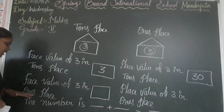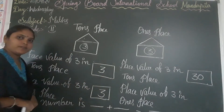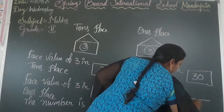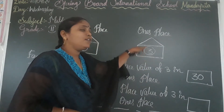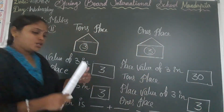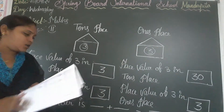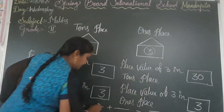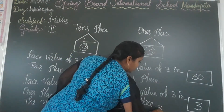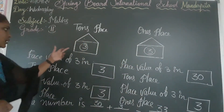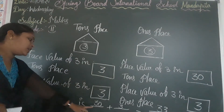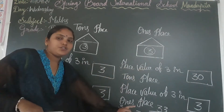Face value of 3 in the 1's place — wherever it is placed, face value never changes, so write 3. Place value of 3 in the 1's place: since 3 is in the 1's place, the place value of 3 is 3. Next, we have to write the number: it is 30 plus 3 equal to 33. So the given number is 33. We have written the face values, place values, and the final number.